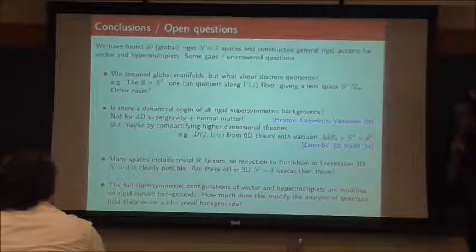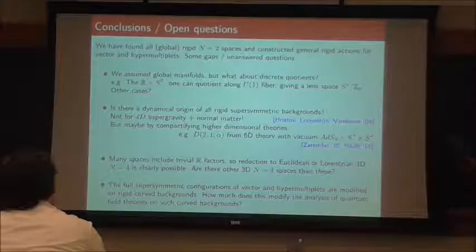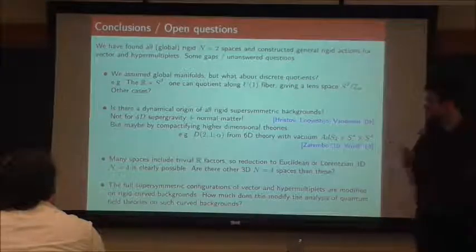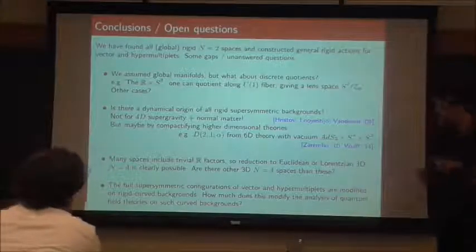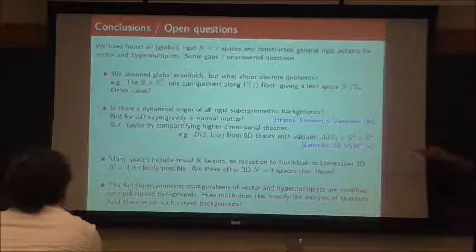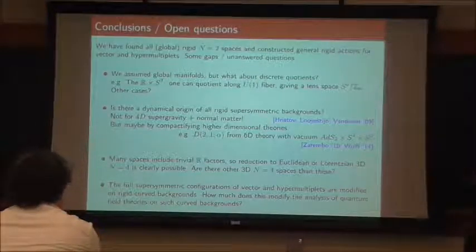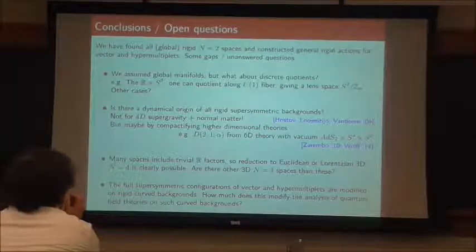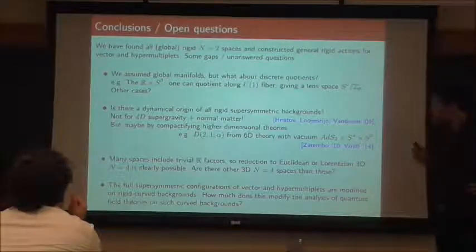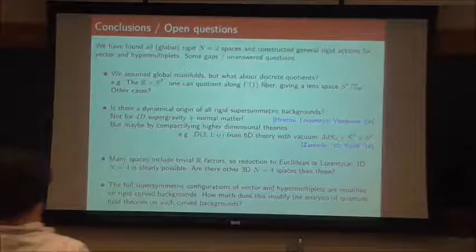Another point: not all of these arise from 4D supergravity plus normal matter. If you take the most general 4D supergravity plus matter allowed in four dimensions, you don't get all of these backgrounds — but that doesn't mean these are unphysical. It was pointed out to us by Dmitri Sorokin that the D(2,1;α) case — AdS₂×S² with different radii — can be realized in a different physical context.